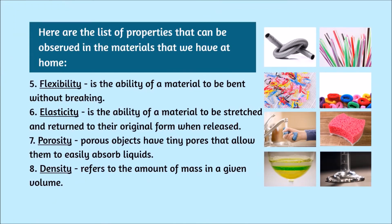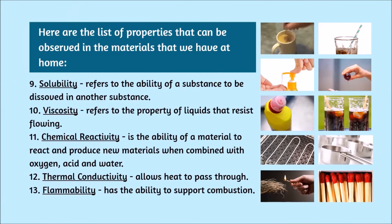Number five, flexibility — it is the ability of a material to be bent without breaking. Example: water hose and plastic straws. Number six, elasticity — the ability of a material to be stretched and returned to its original form when released. Example: rubber bands. Number seven, porosity — porous objects have tiny pores that allow them to easily absorb liquid. Example: sponge. Number eight, density refers to the amount of mass in a given volume. Number nine, solubility refers to the ability of a substance to be dissolved in another substance. Example: coffee and hot water.